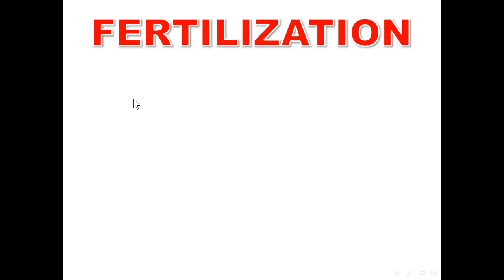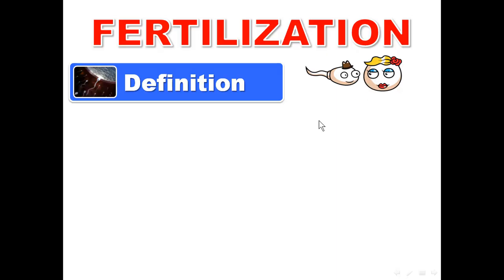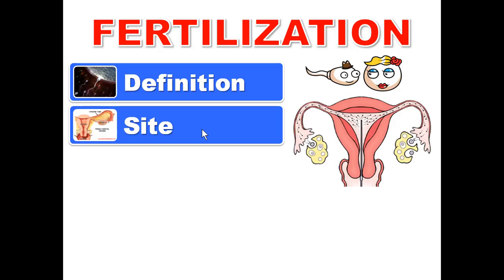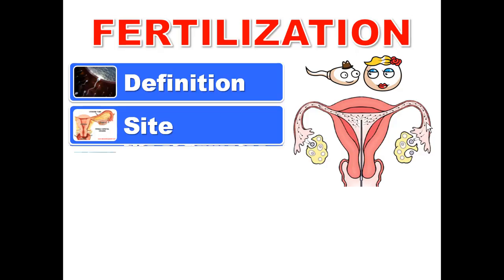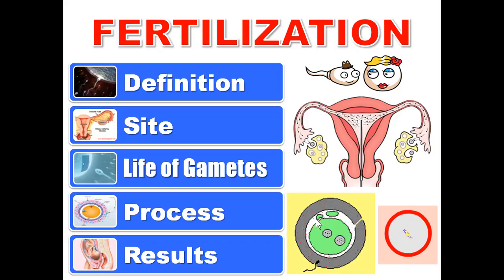What is fertilization? Fertilization is the fusion of the nucleus of the sperm with the nucleus of the ovum. The normal site of fertilization is the lateral one third of the uterine tube, the ampulla of the uterine tube. We'll also talk about the life span of the gametes — sperm and ovum — and the process and results of fertilization.